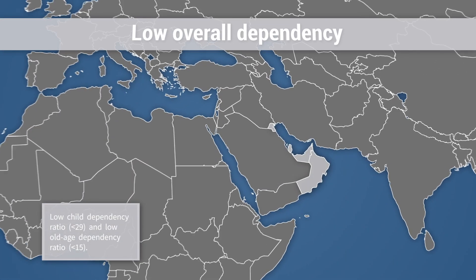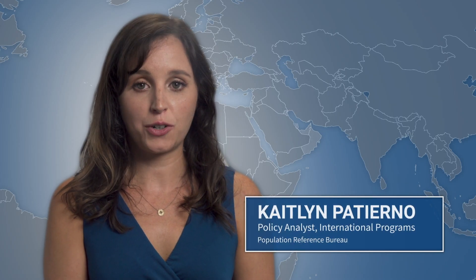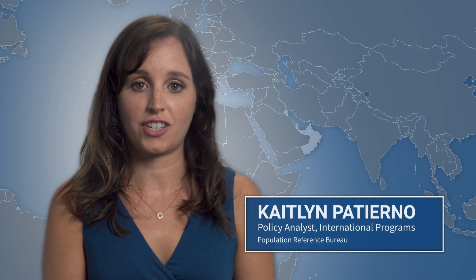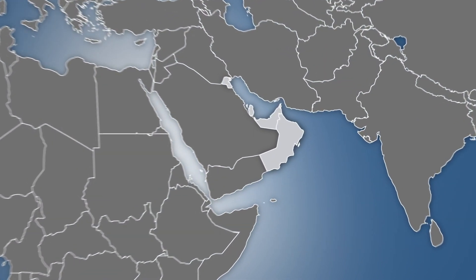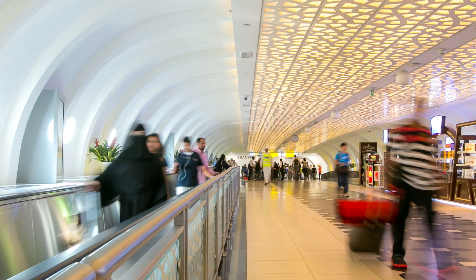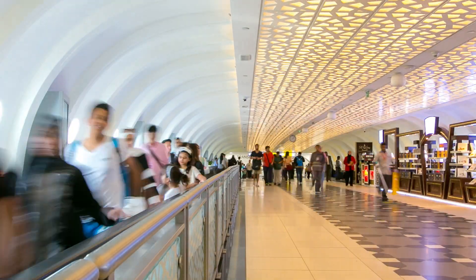Low overall dependency countries have low to moderate child dependency and low old age dependency. This category of age structure occurs when countries, including Kuwait, Oman, and United Arab Emirates, experience sustained immigration of working age adults, which keeps the working age population larger.